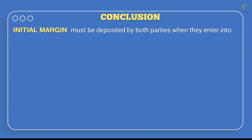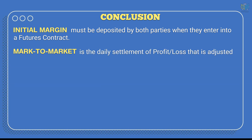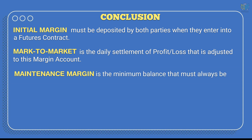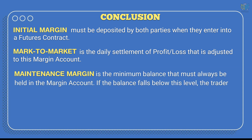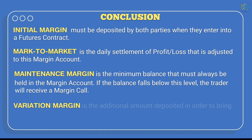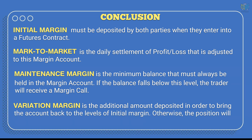Here is what we can conclude. Initial margin is what both the long and short must deposit with their brokers in order to enter into a futures position. Mark-to-market is the daily settlement of profit and loss that is adjusted to the margin account. Maintenance margin is the minimum balance that must always be kept in the margin account. If the value of the account falls below the maintenance margin, the trader will receive a margin call. Variation margin is the additional amount that must be deposited by the trader in order to bring the margin account back to the level of initial margin; otherwise, his position will be liquidated or closed automatically.